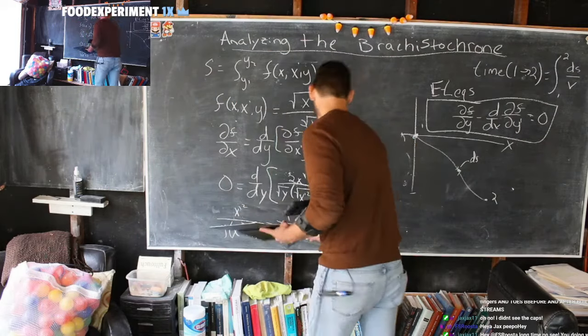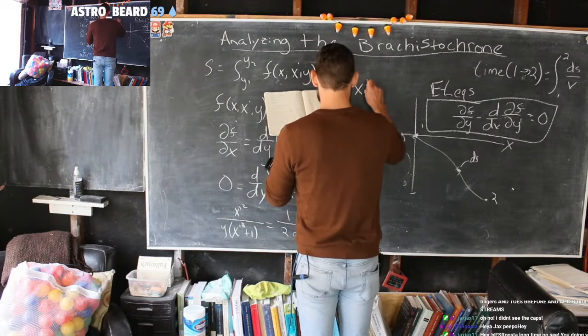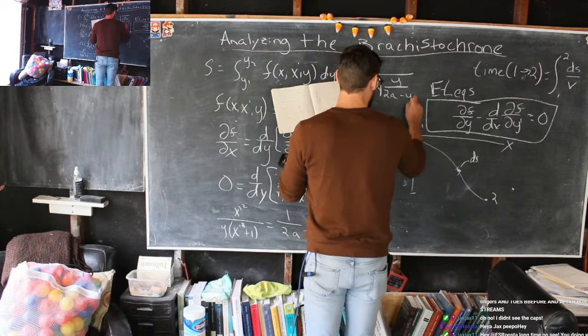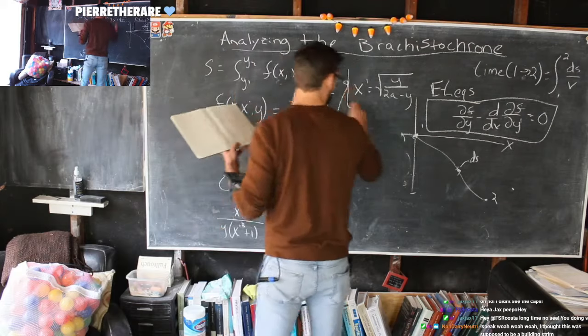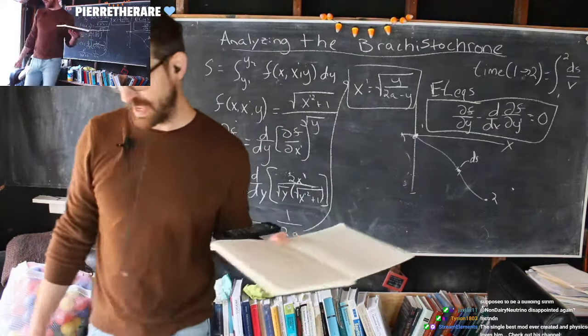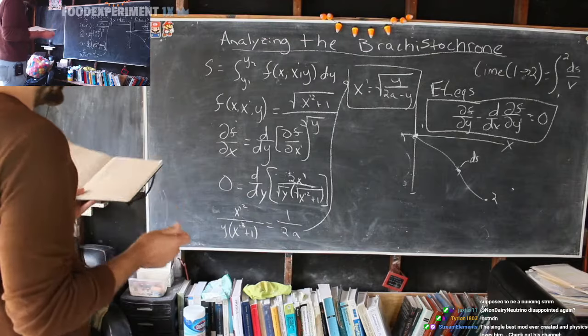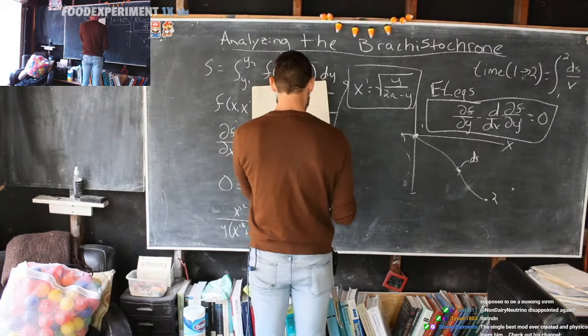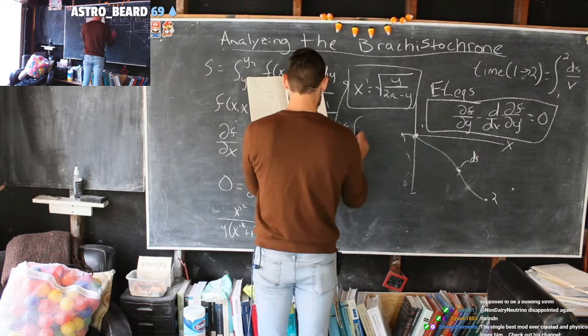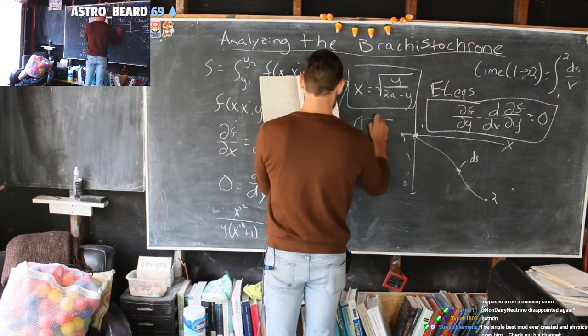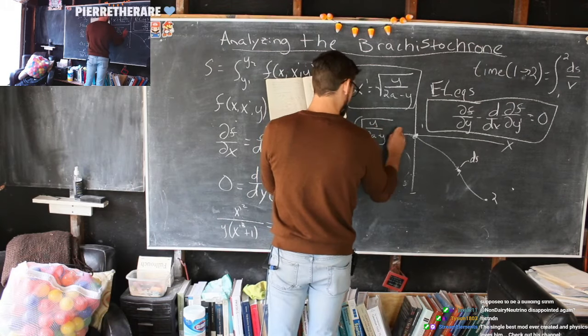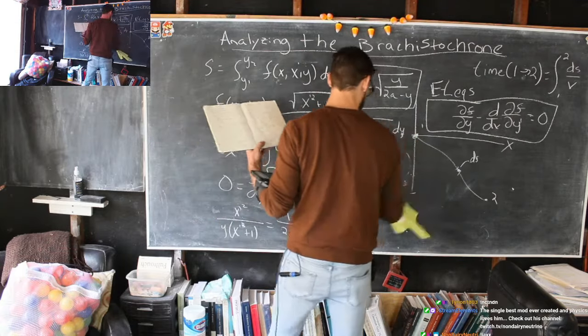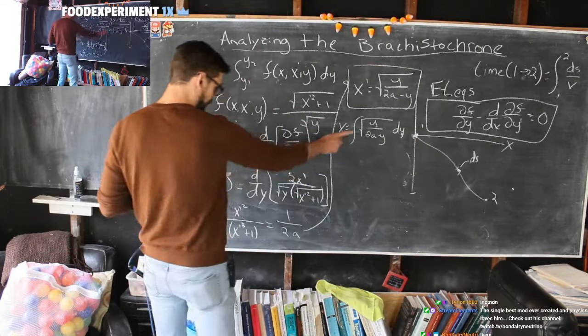And we can find out that X prime is equal to the square root of Y divided by two A minus Y. Okay. So now we have X prime, but that's still just the derivative of X. So we want to find what X is. Remember this is X prime. So it's the DX DY. So that means X is equal to the integral of this function, the square root of Y over two A minus Y, DY. And this is what we need. We just need to figure out this integral.